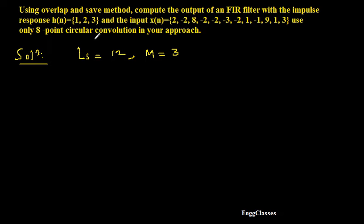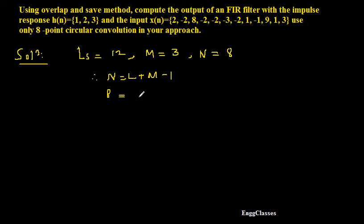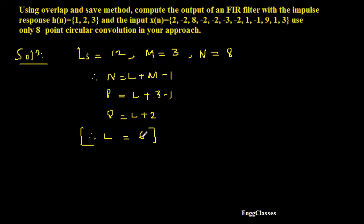Now it has been said to use only 8-point circular convolution, so indirectly the block size is going to be 8, meaning N equals 8. Using the formula N equals L plus M minus 1, I can find L. So 8 equals L plus 2, therefore L equals 8 minus 2, which turns out to be 6. L equal to 6 means I need to consider 6 samples from the input, but the block size must be 8, so the remaining 2 samples must come from the previous block.